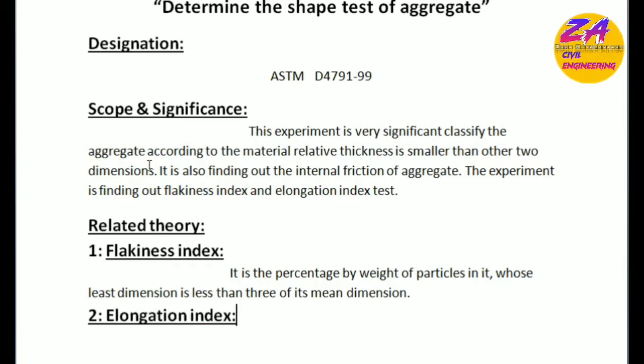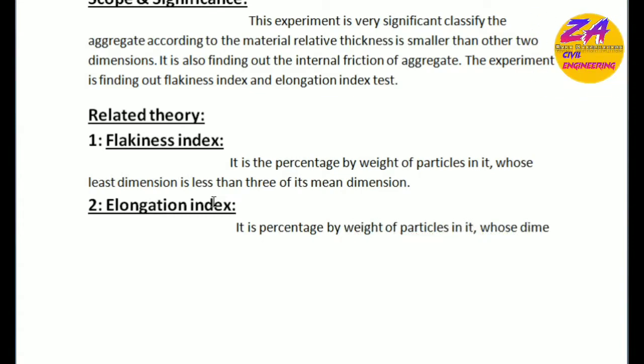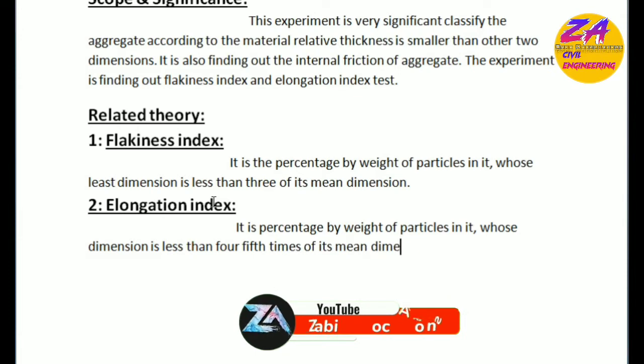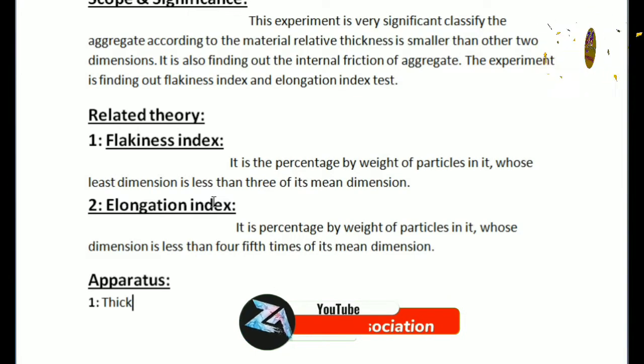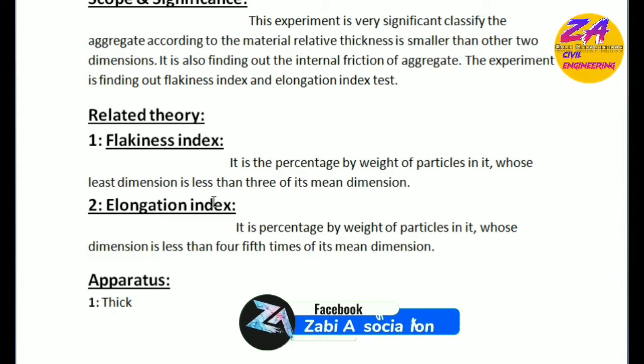After this, elongation index: what is elongation index? It is percentage by weight of particles in which the greatest dimension is greater than nine-fifths times of its mean dimensions. After this, apparatus used in this experiment.